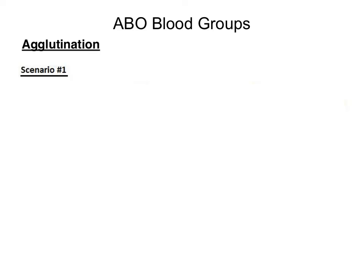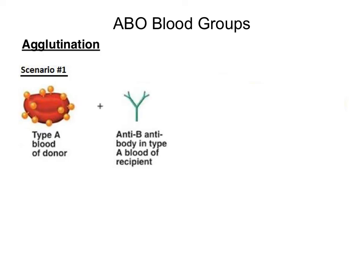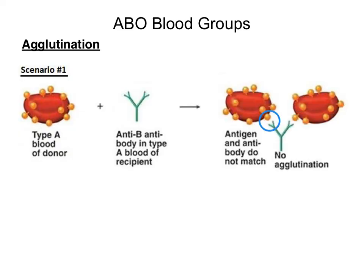In scenario number one, we have a donor who has type A blood, and this donor will be donating their blood to a person who also has type A blood. The plasma of the recipient will contain anti-B antibodies. Notice the shape of the A antigen and the receptor of the anti-B antibodies. Because the shape of the receptor on the anti-B antibodies is different from the shape of the antigen, no agglutination occurs — there is no clumping of red blood cells.